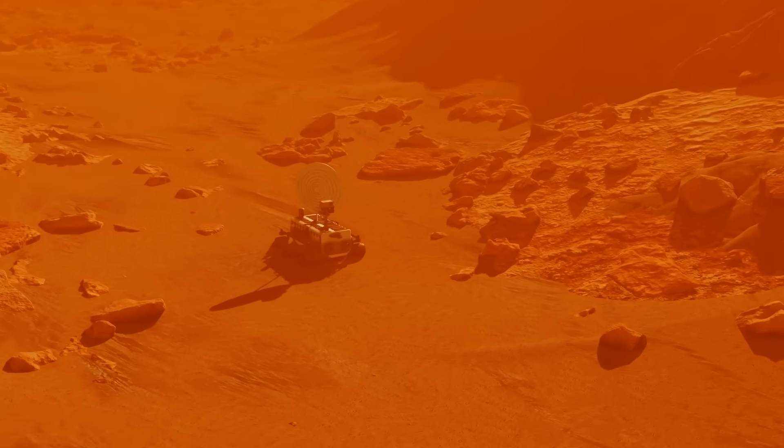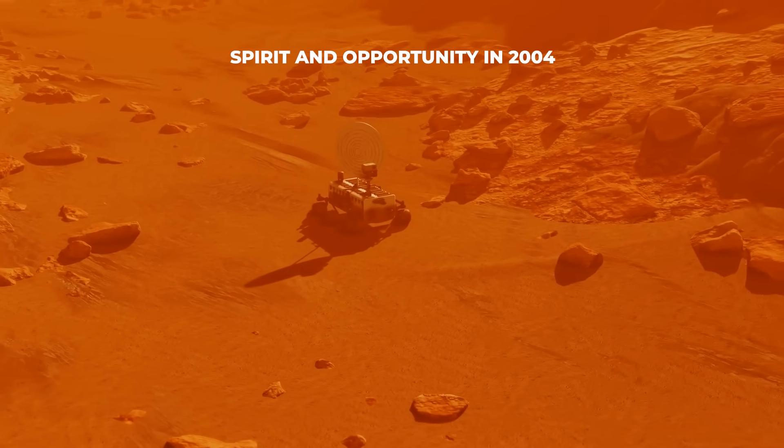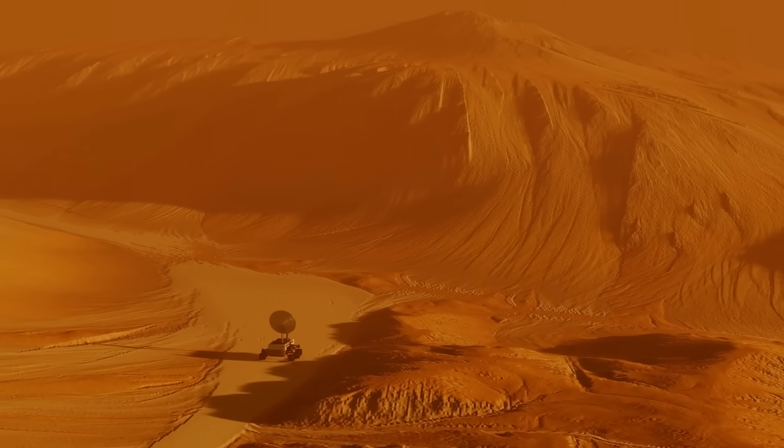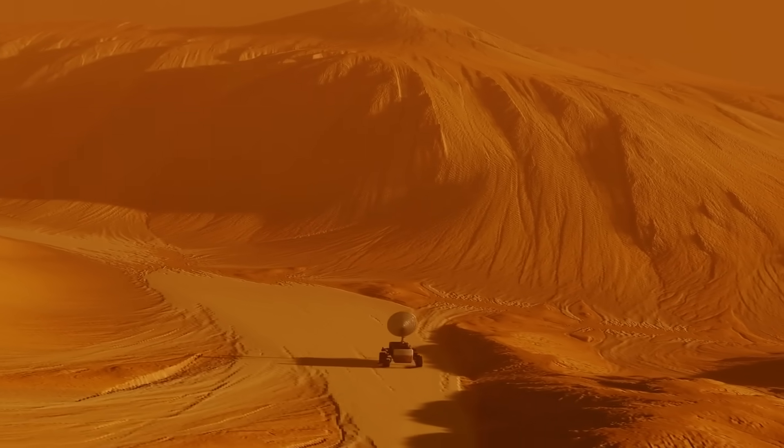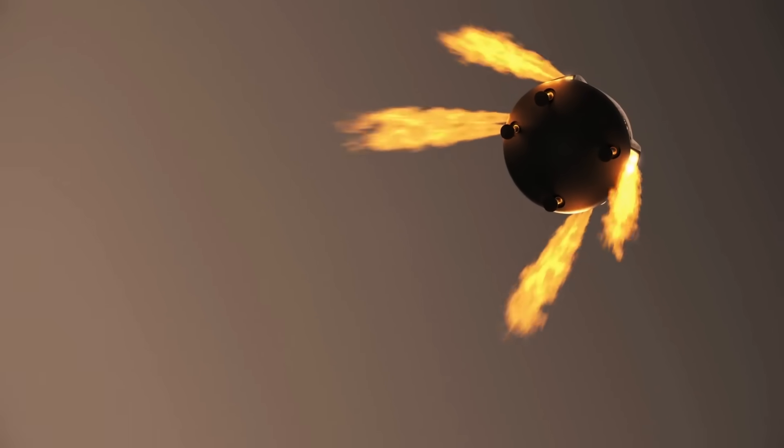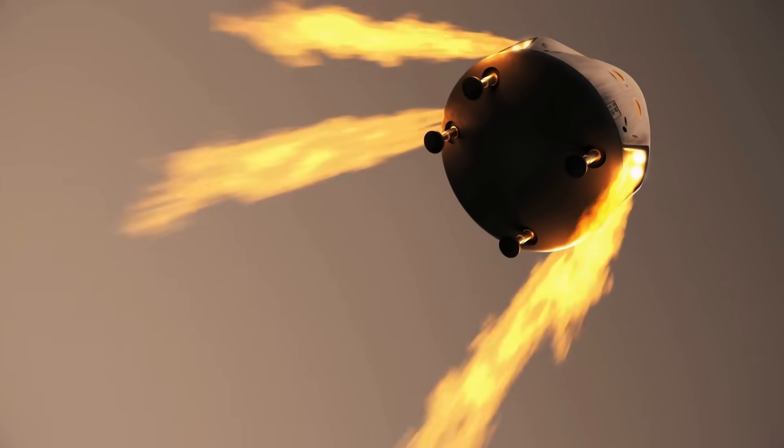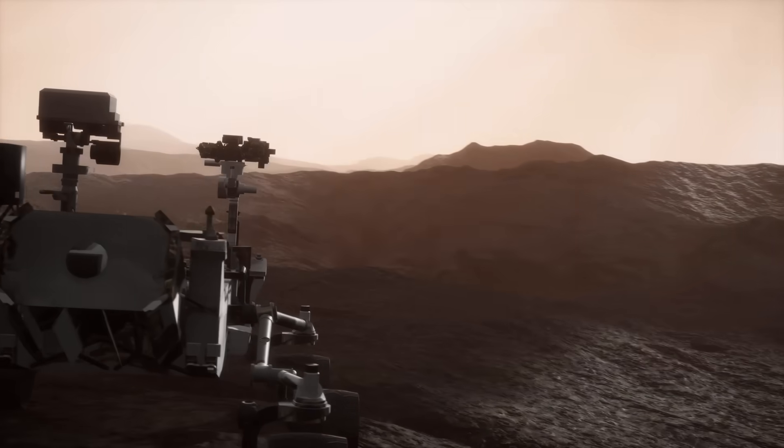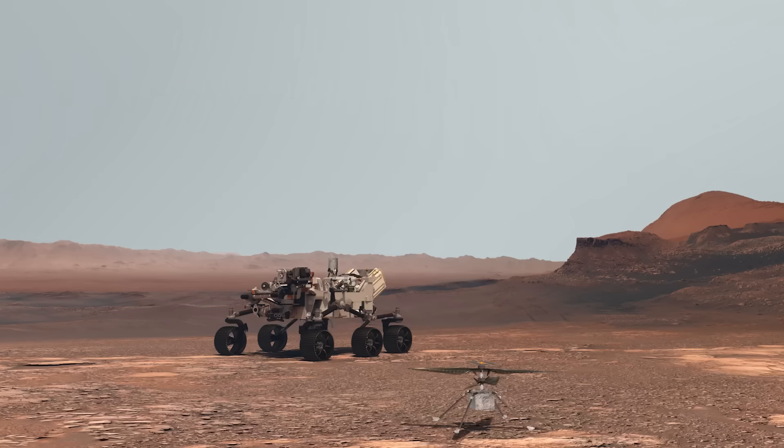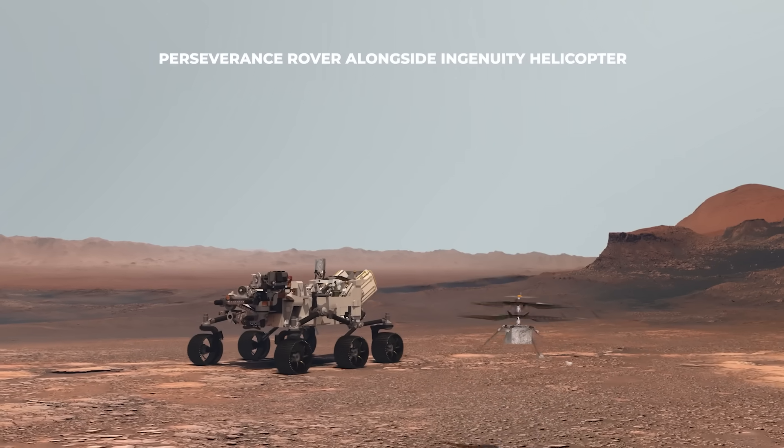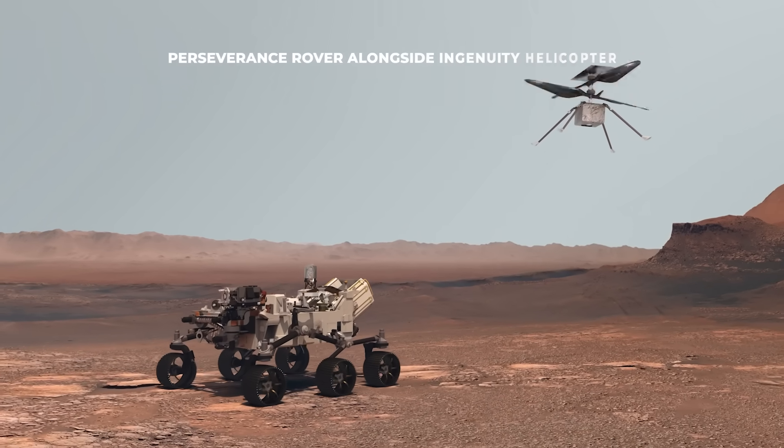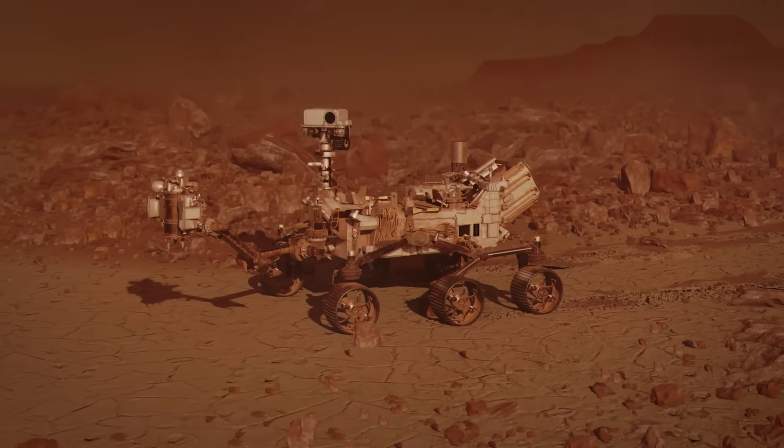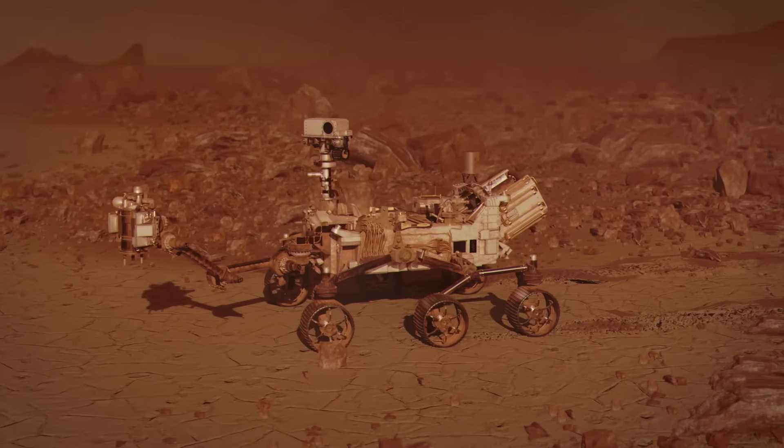Since then, we've seen increasingly advanced missions such as Spirit and Opportunity in 2004 that exceeded all expectations by traveling great distances and uncovering evidence that Mars had water in the past. Later in 2012, Curiosity arrived equipped with scientific laboratories to analyze rocks and atmosphere, confirming that Mars may have been habitable in the past. In 2021, the Perseverance rover landed alongside the Ingenuity helicopter, achieving the first controlled flight on another planet. Perseverance continues to collect samples that could be brought back to Earth.